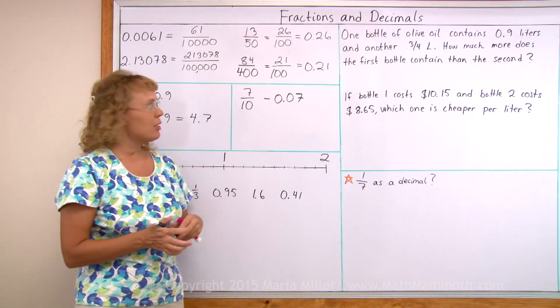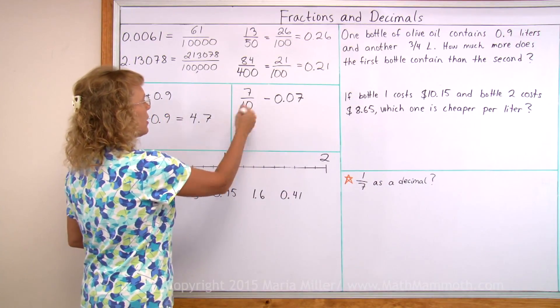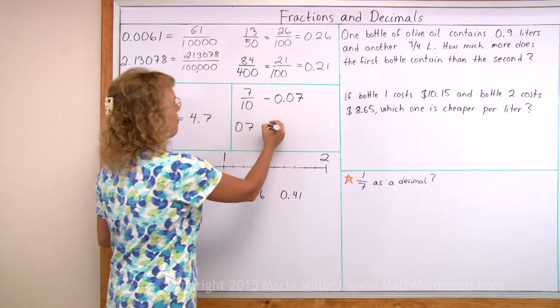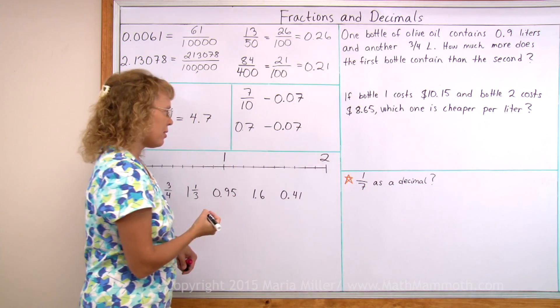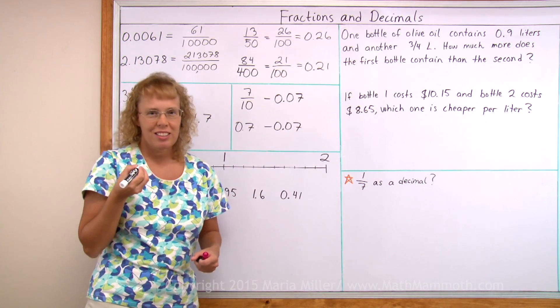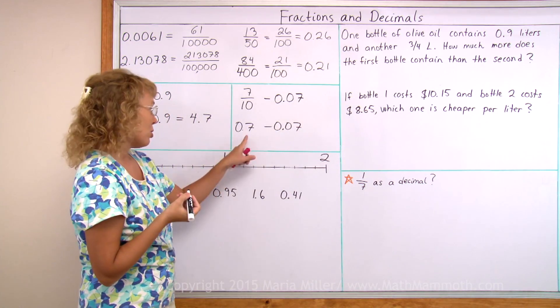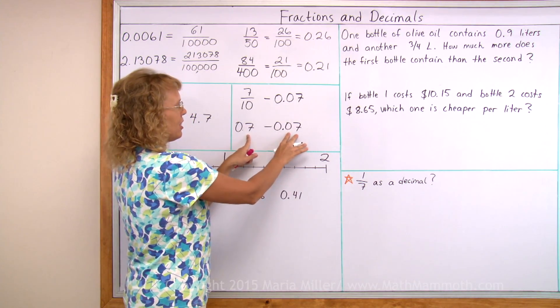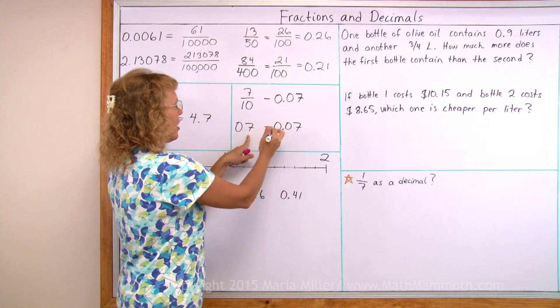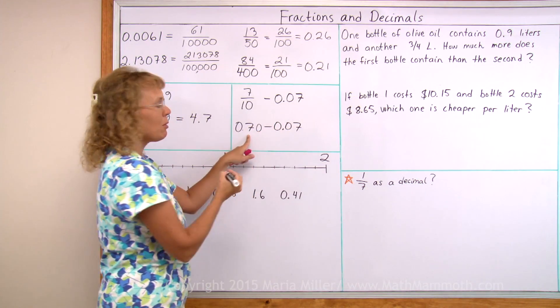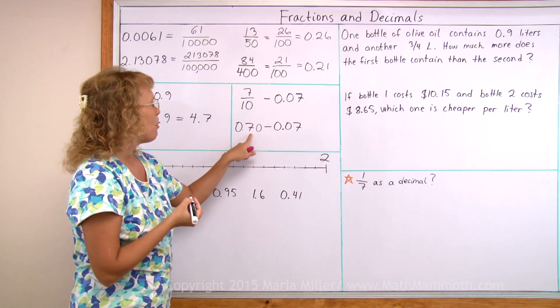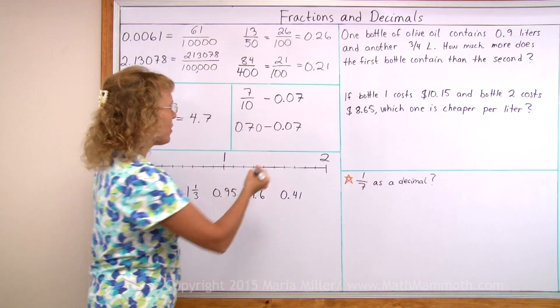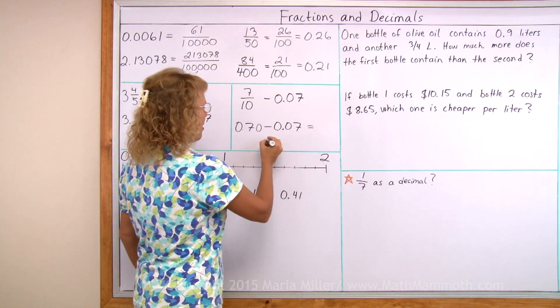Over here I'm going to try to do the same, write this as a decimal. So it is seven-tenths, 0.7. And here's seven-hundredths. Do you remember this little trick to make decimal addition or subtraction easier? If the decimals have a different number of decimal digits, you can tag a zero here. And it will not change its value. And now we have 70 and seven-hundredths. And so the answer is 63 hundredths.